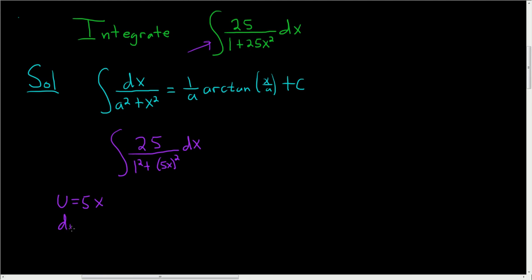Then du = 5dx. We don't have a 5 here, we have a 25. The most elegant way is to multiply both sides by 5, so we get 5du = 25dx.